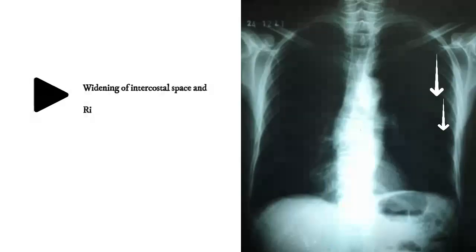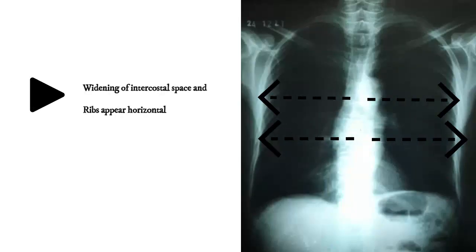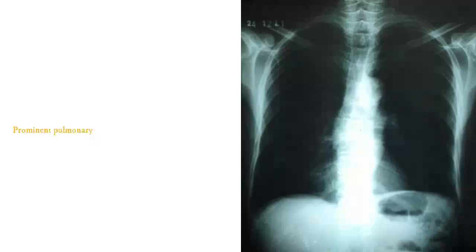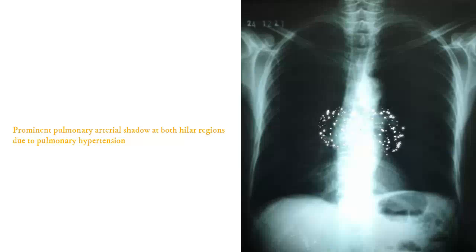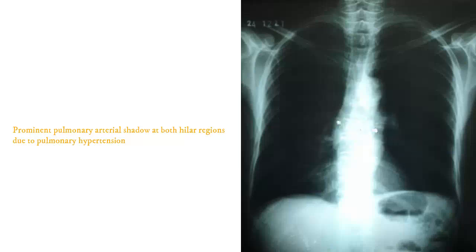Widening of the intercostal space, and ribs appear horizontal on chest X-ray. There is also a prominent pulmonary arterial shadow at both hilar regions due to pulmonary hypertension.